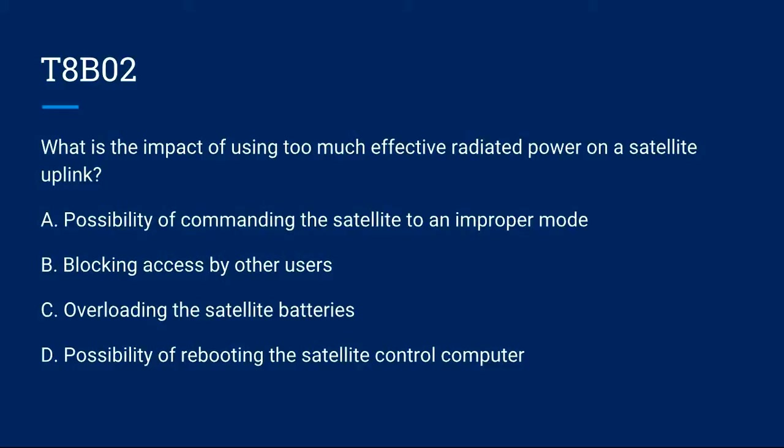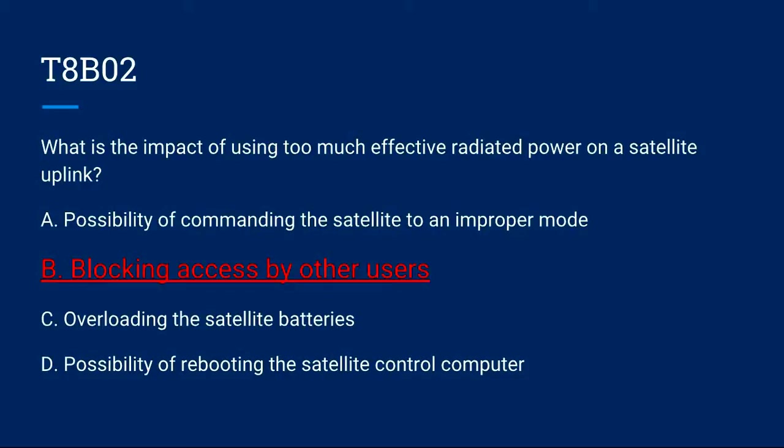T8B02: What is the impact of using too much effective radiated power on a satellite uplink? A. Possibility of commanding the satellite to an improper mode. B. Blocking access by other users. C. Overloading the satellite batteries. Or D. Possibility of rebooting the satellite control computer. The correct answer is B: blocking access by other users.